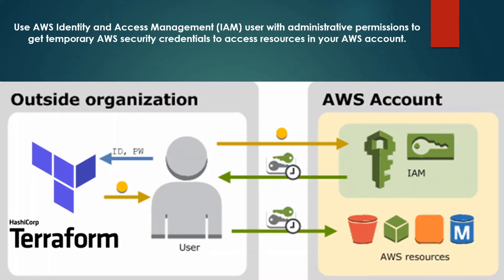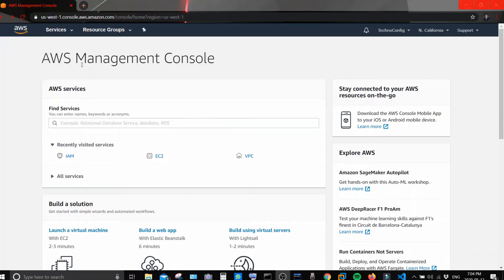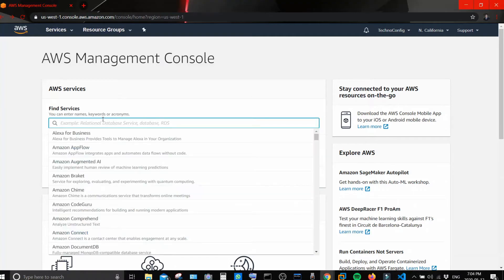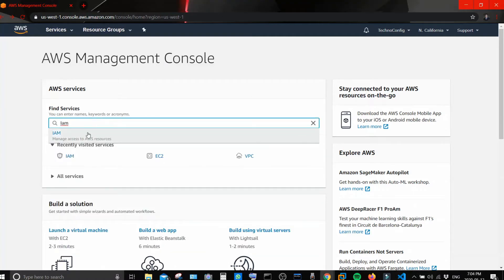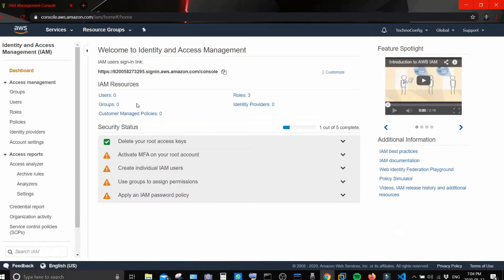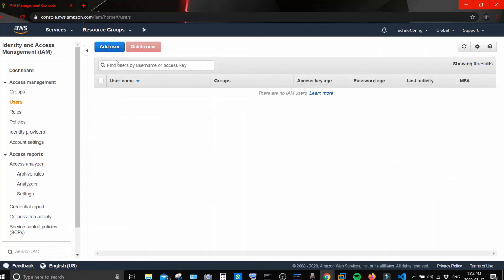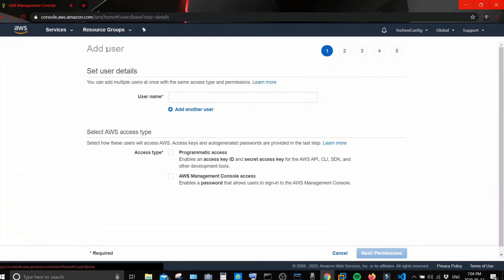Specifically, the main.tf, variables.tf, and a file called terraform.tfvars. The user has an account with administrative permission and is accessing AWS resources through it. Once you are in your AWS Management Console, click on 'Find Services', search for IAM, and here we see the Identity and Access Management window. From the left side, click on 'Users', and from the top click the blue 'Add User' button.